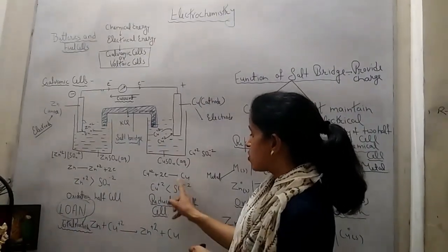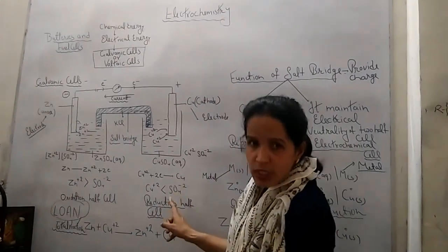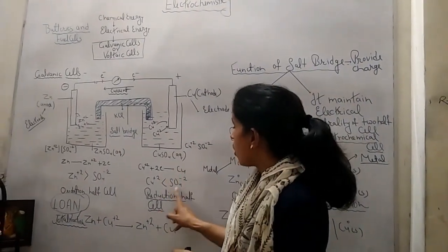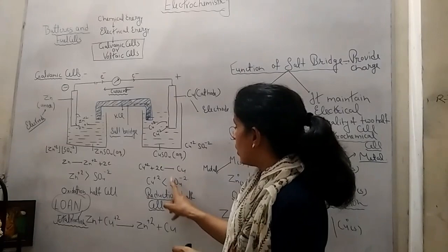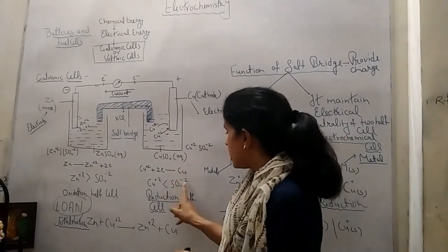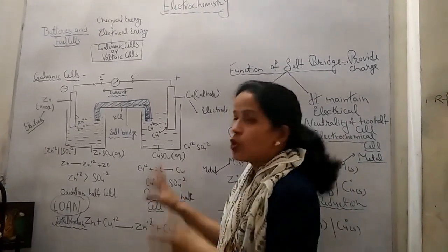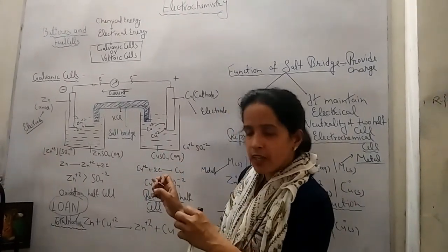Similarly, if the concentration of SO₄²⁻ increases on the copper side, it does not allow Cu²⁺ to accept the electrons.